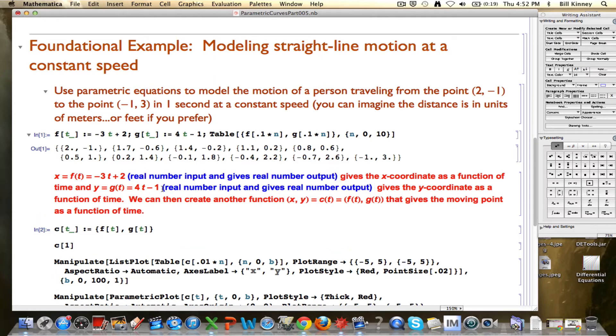g of t is the same kind of function, t is the input, y is the output. But this other function here is a different kind of function and I've emphasized this by labeling the output here x comma y as a point. That's taking real number input, t is still the input for this function c, but it's not giving you real number output. It's giving you a point as output. As t varies, you get a different point.